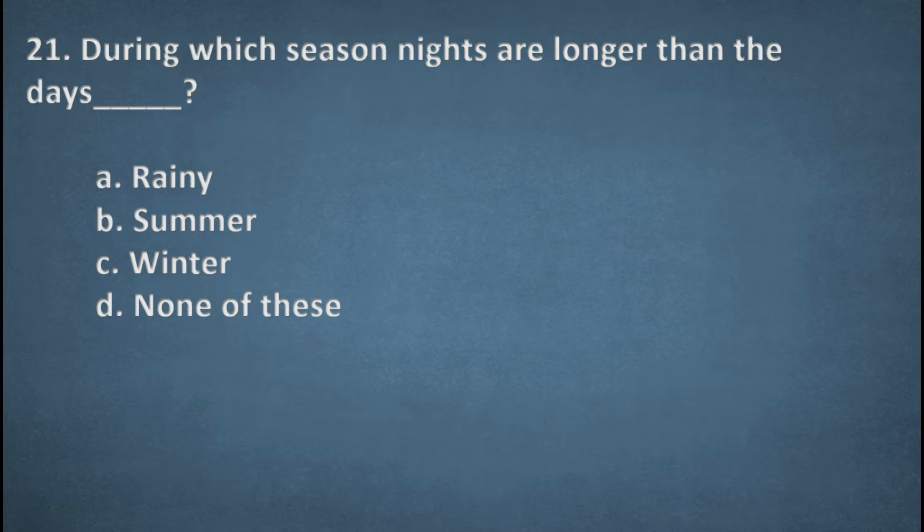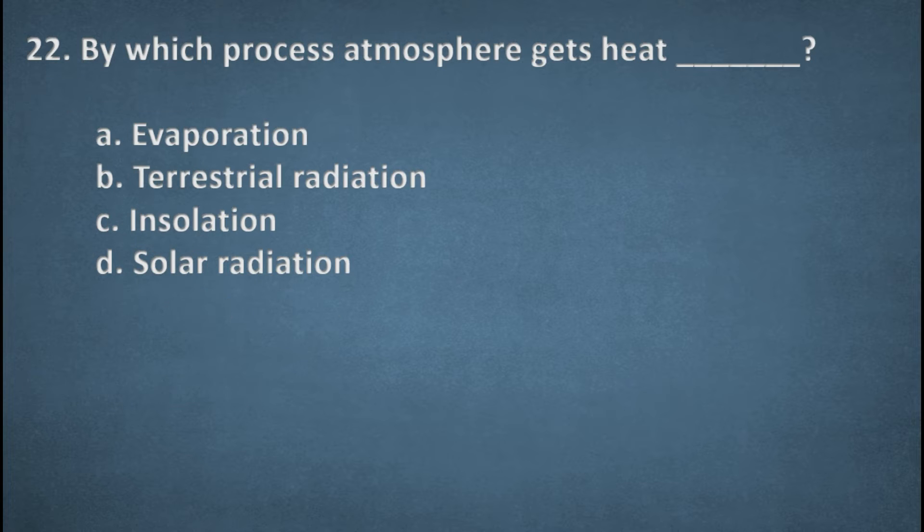Next one. During which season nights are longer than the day? Options: Rainy, Summer, Winter, None of these. The right option, Winter, Option C. Next one. By which process atmospheric gets heated? Options: Evaporation, Terrestrial radiation, Insolation, Solar radiation. The right option, Terrestrial radiation.